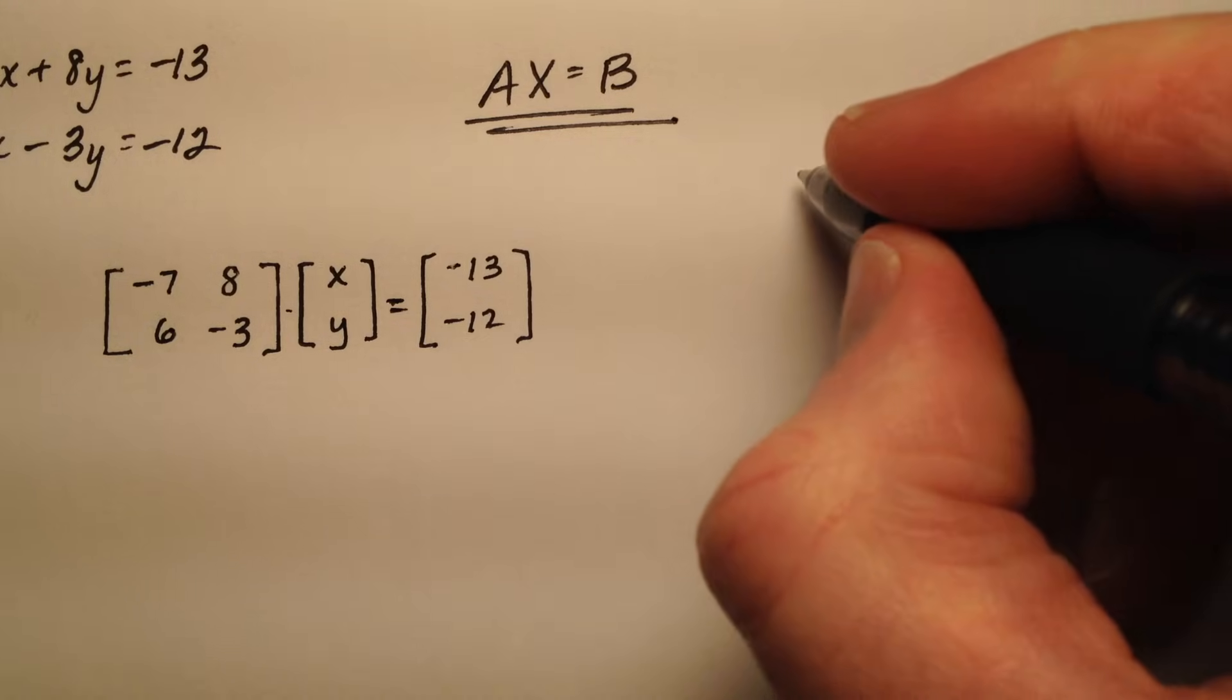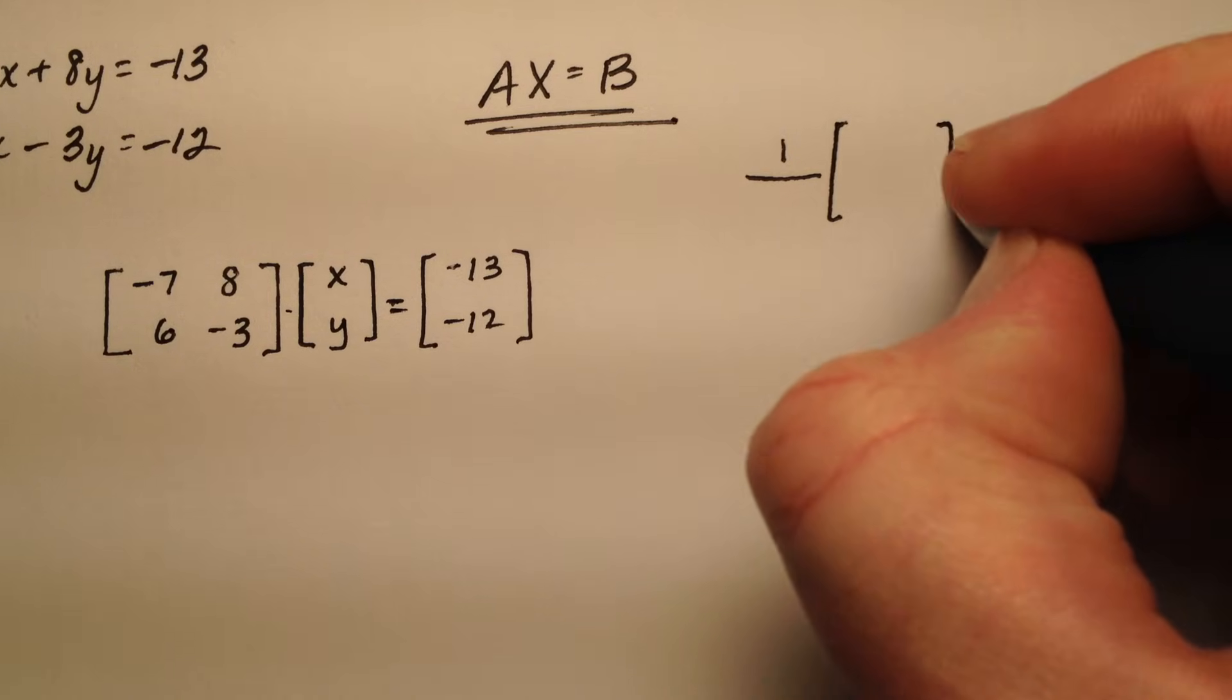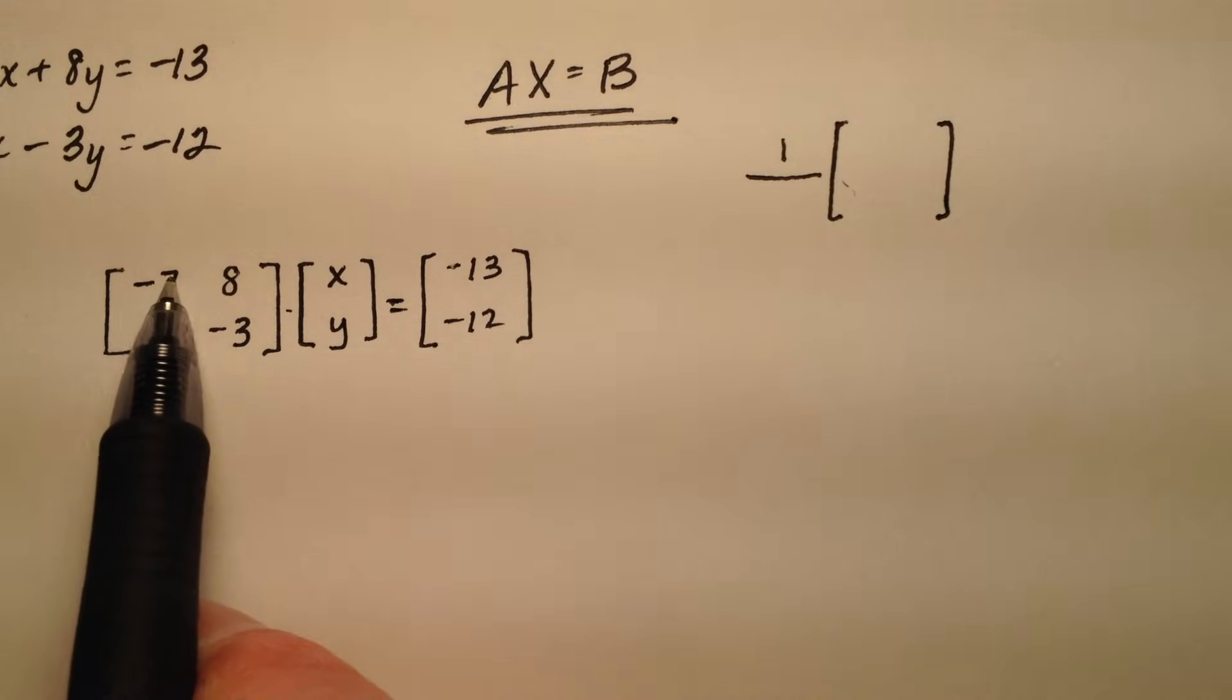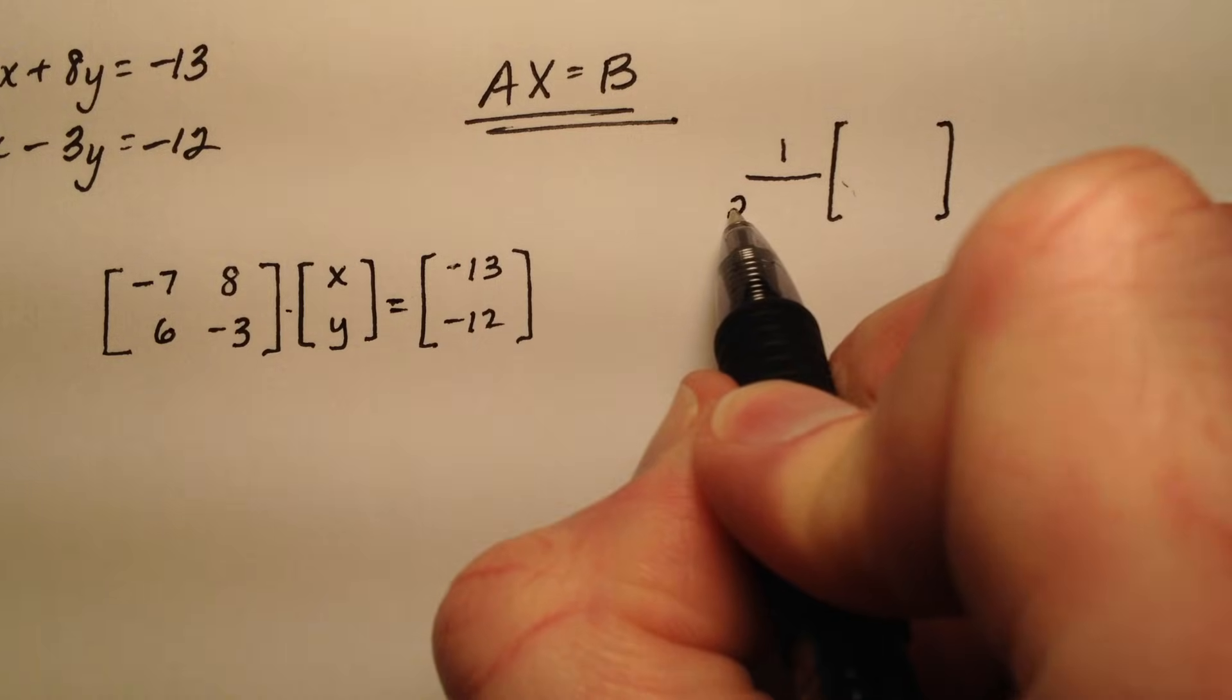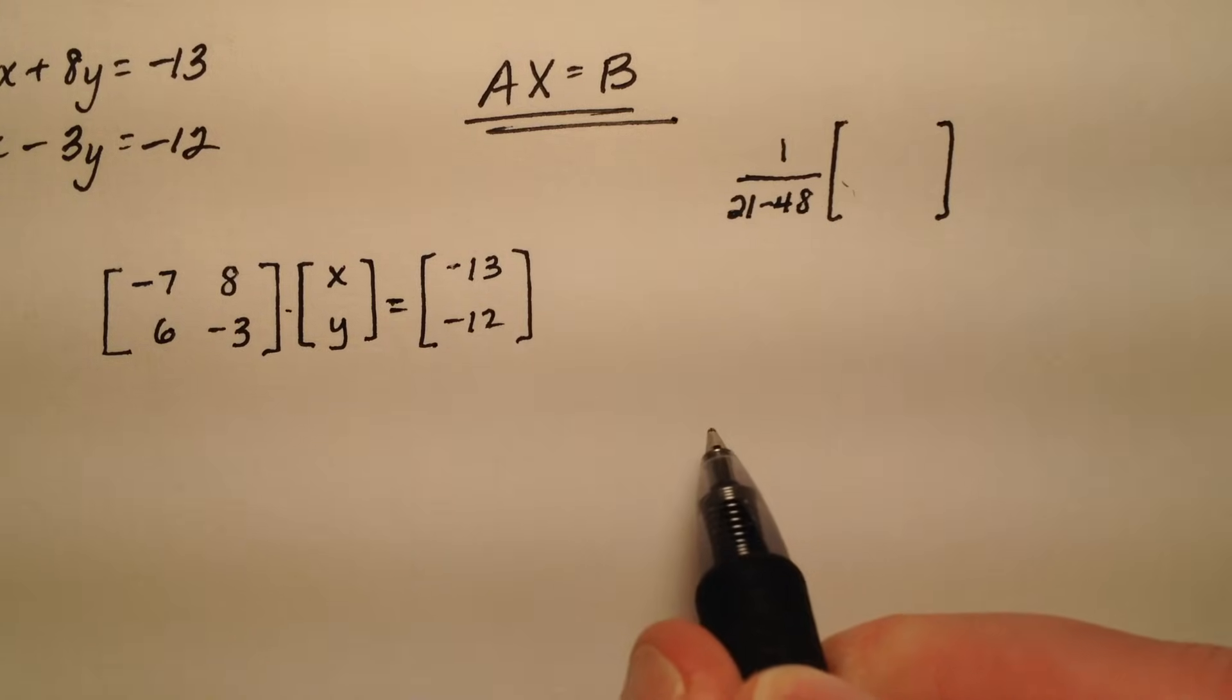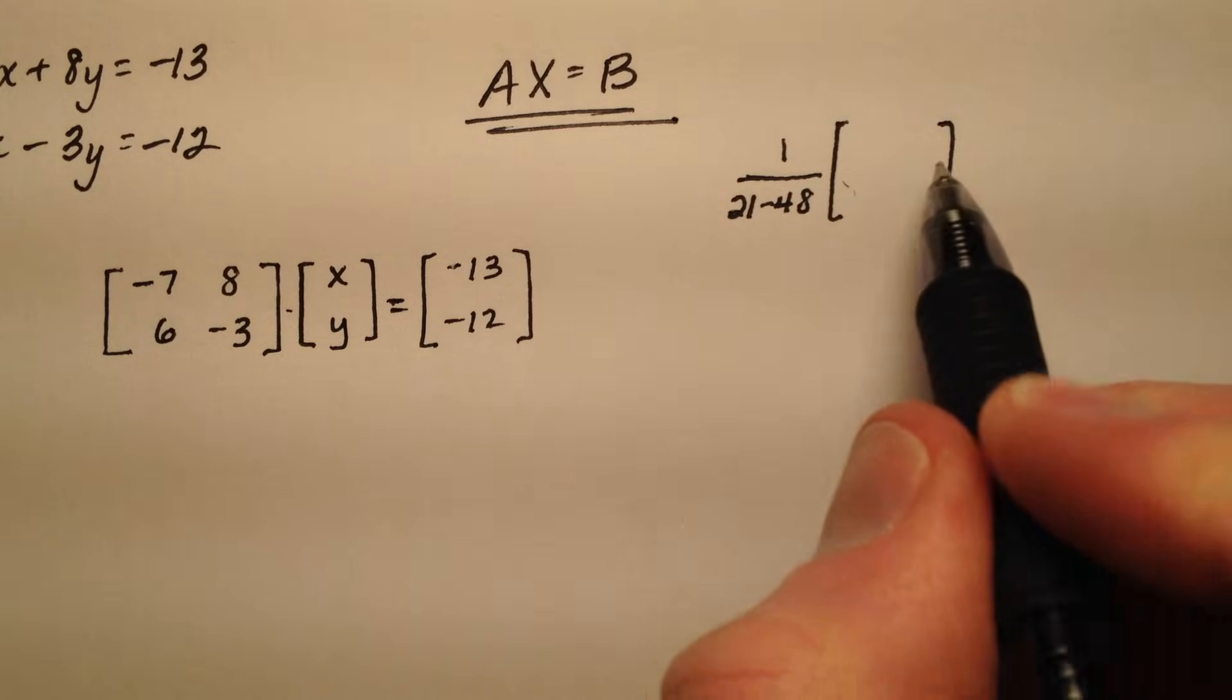In order to find the inverse it's going to be 1 over the determinant and then I'm going to rearrange these terms a little bit. So the determinant is going to be negative 7 times negative 3 which is going to be positive 21 minus 6 times 8 is 48.